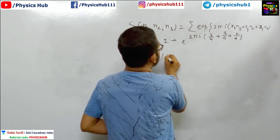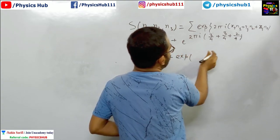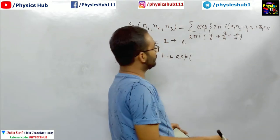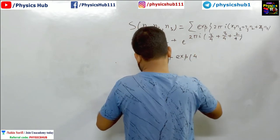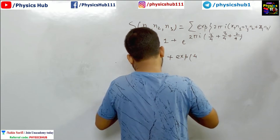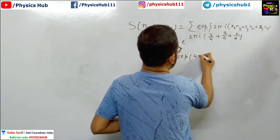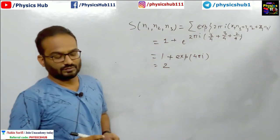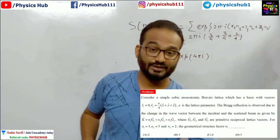So this is equal to 1 plus exponential - 6, 8 by 4 is 2 - so 4πi. And what is this value? This value is 1. So the factor is coming out to be 2.